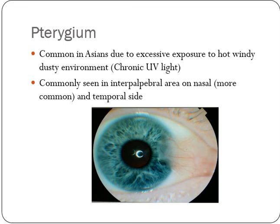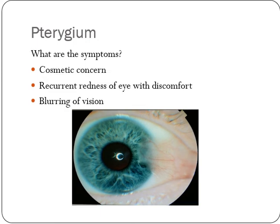The interpalpebral area — that is, the area of the conjunctiva between the upper and lower lid — is exposed to UV light. It has been shown to be more common on the nasal side compared to the temporal side.